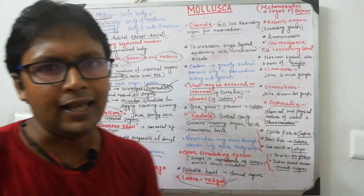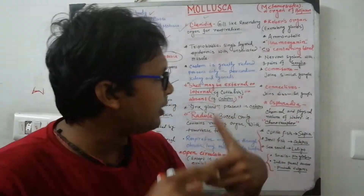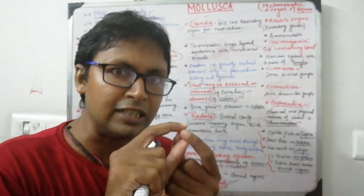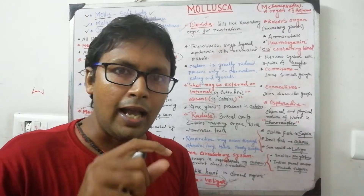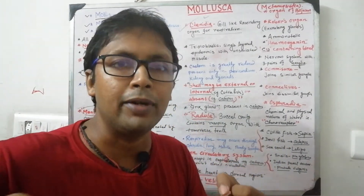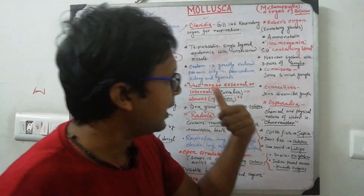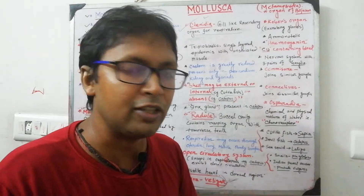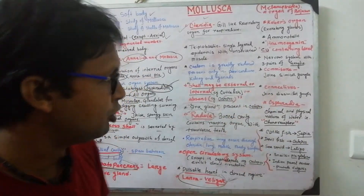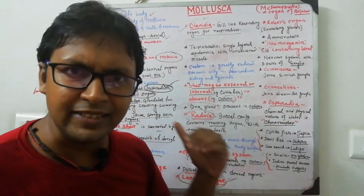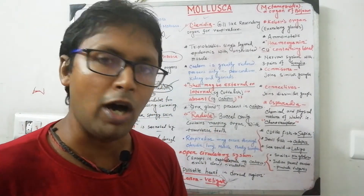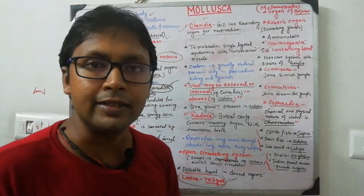The nervous system has three pairs of ganglia. Two important terms are commissure and connectives. Commissure refers to the junction that connects similar types of nerves; connectives join dissimilar ganglia or nerves. Molluscs have both commissures and connectives. The osphradium functions as a chemoreceptor that detects the chemical and physical nature of the water.